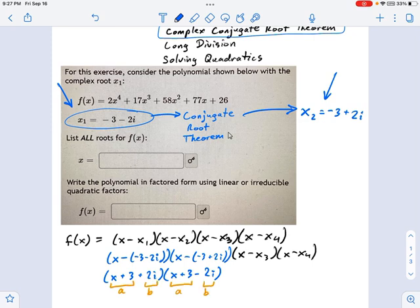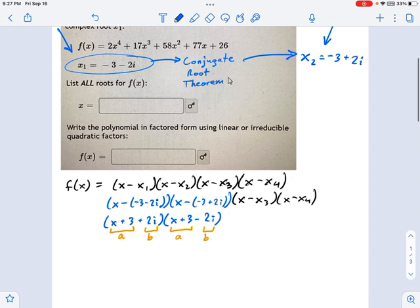And I'm also going to point out that this is set up right now as a difference of squares. My a term is x plus 3. My b term is 2i. So what I really have is a minus a plus b times a minus b. We can use that.